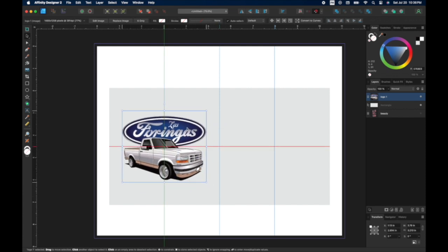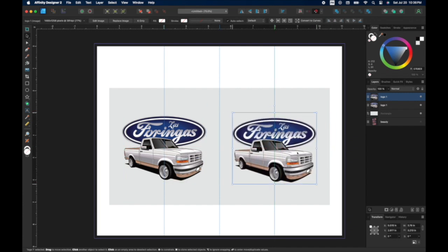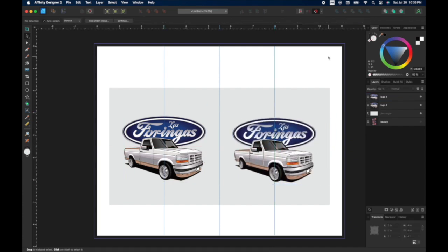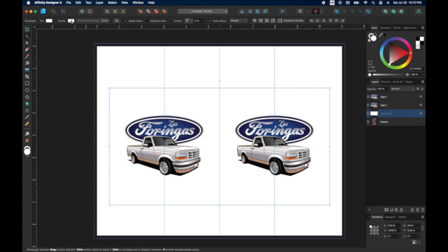I copied and pasted that to the other side so that there could be a design on both sides, and then made the rectangle white. I exported it as a JPEG and printed it on my sublimation printer.